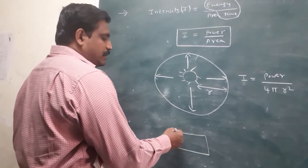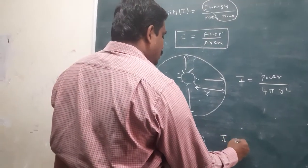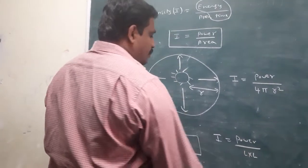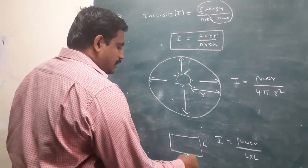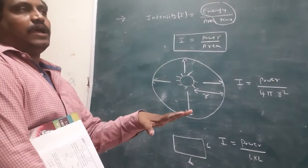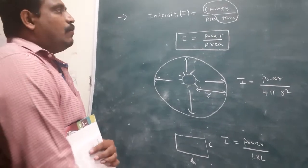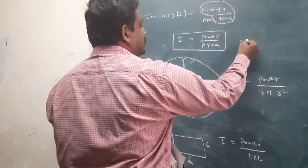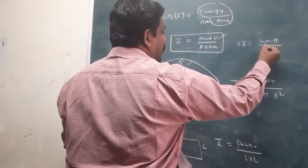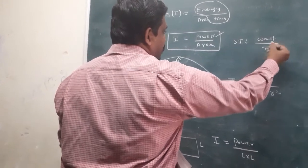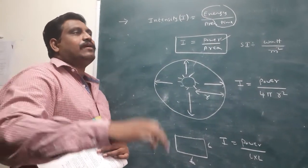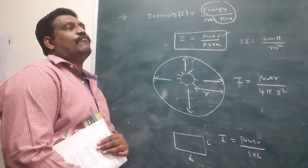In some situations, light propagates in the shape of a square. Then intensity equals power by area, where area equals side into side. If the shape is rectangular, area equals length into breadth. The SI unit of intensity is Watt per meter squared (W/m²).